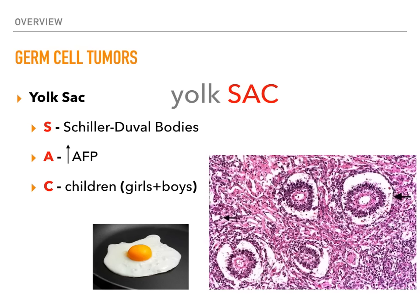Quick summary: yolk sac tumors — think SAC: Schiller-Duvall bodies, AFP, and found in children. Think about looking top-down on a cracked open egg, seeing that yolk sitting on the background of egg whites — that is a Schiller-Duvall body, which is said to look like a glomerulus. Yolk sac tumors are also known as endodermal sinus tumors and can be found in both sexes. That is our first germ cell tumor.